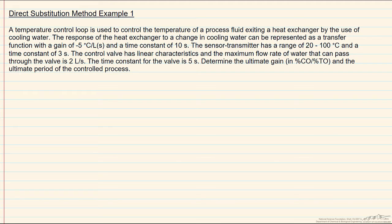In this screencast we will take information about a process and put it together in order to determine the ultimate gain and ultimate period of a process. For this example we'll be looking at a temperature control loop which will be controlling a temperature via the use of cooling water.